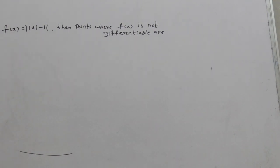f(x) equals ||x| - 1|. Find the points where f(x) is not differentiable.